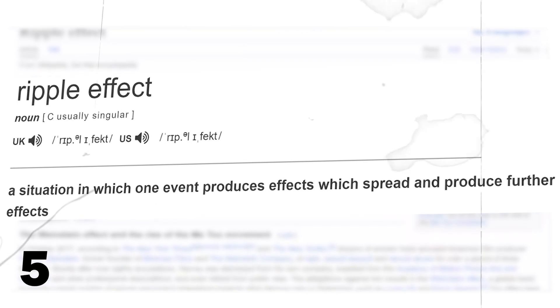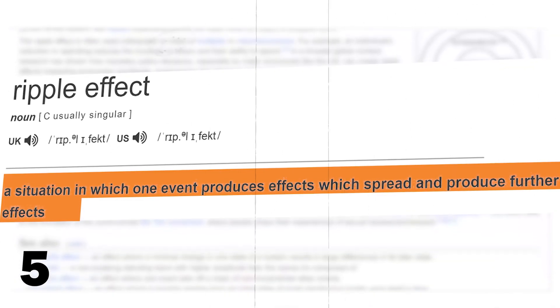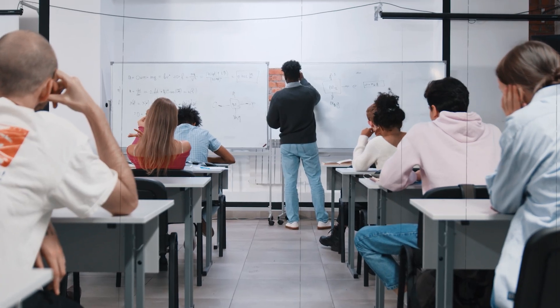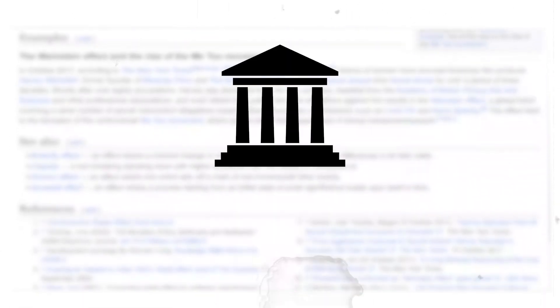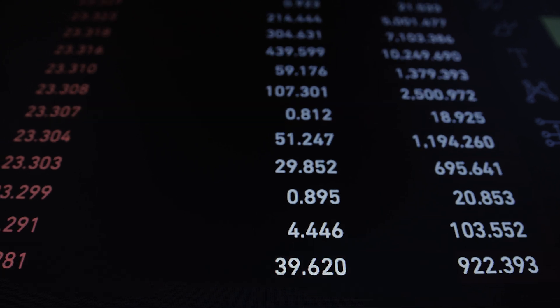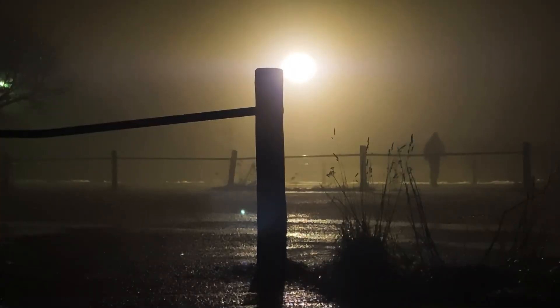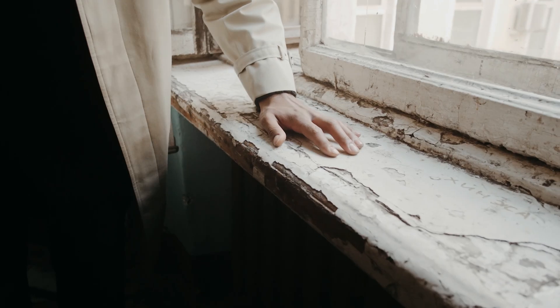The ripple effect is a situation in which one event produces effects which spread and produce further effects. Ripple effects are mostly known from economics, for example when one bank defaults, it can trigger a domino effect leading to more bank failures. Ripple effects often seem unpredictable in the beginning. But sometimes someone predicts seemingly unforeseen consequences right from the start, and perfectly describes how a whole branch of society will develop.